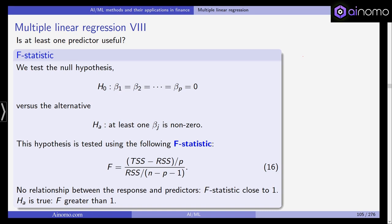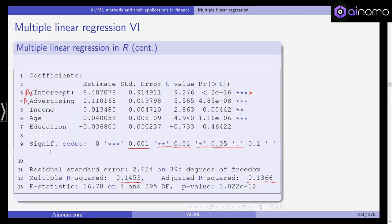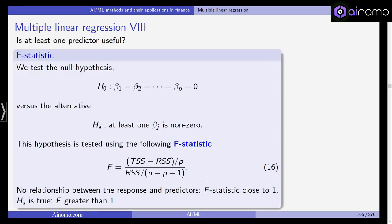If there is no relationship between the response and predictors, the F statistic should be close to 1. If the alternative hypothesis is true, then F should be greater than 1. That's the F statistic we've seen here, and it is rather far away from 1. The F statistic is converted into a p-value and it seems the null hypothesis is actually rejected.